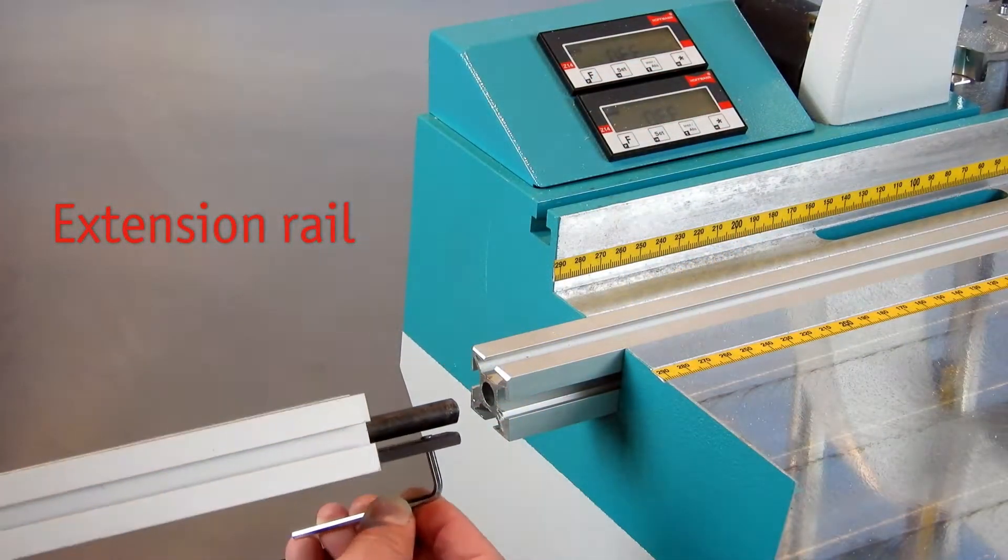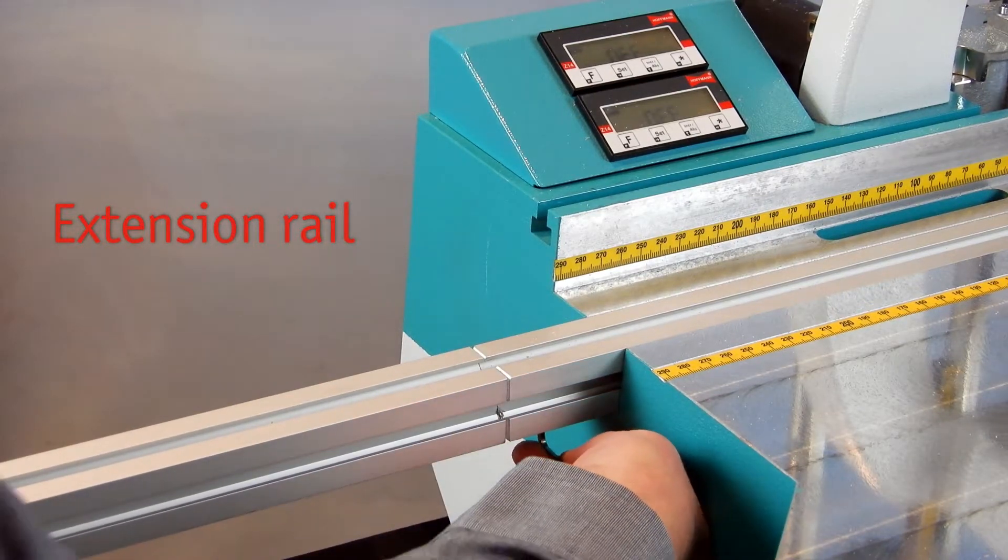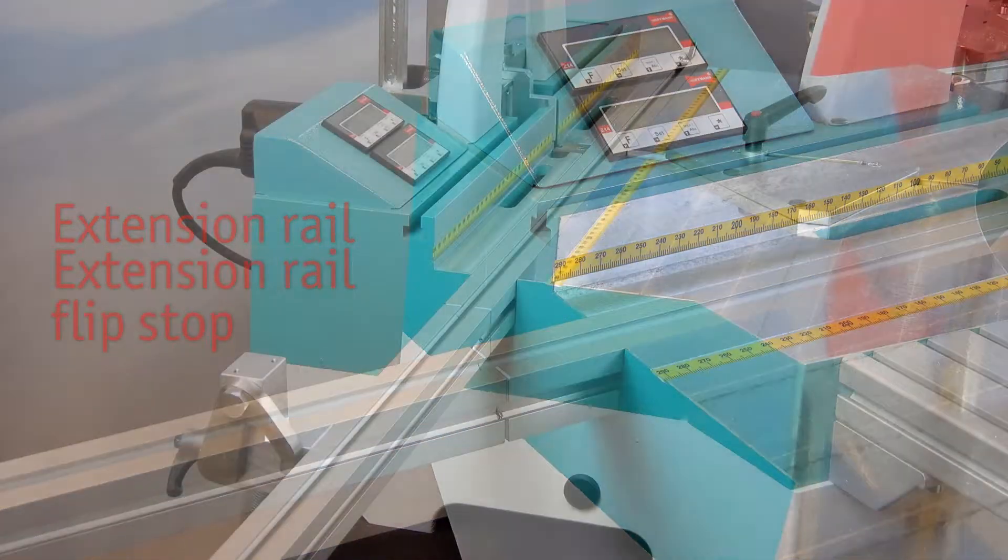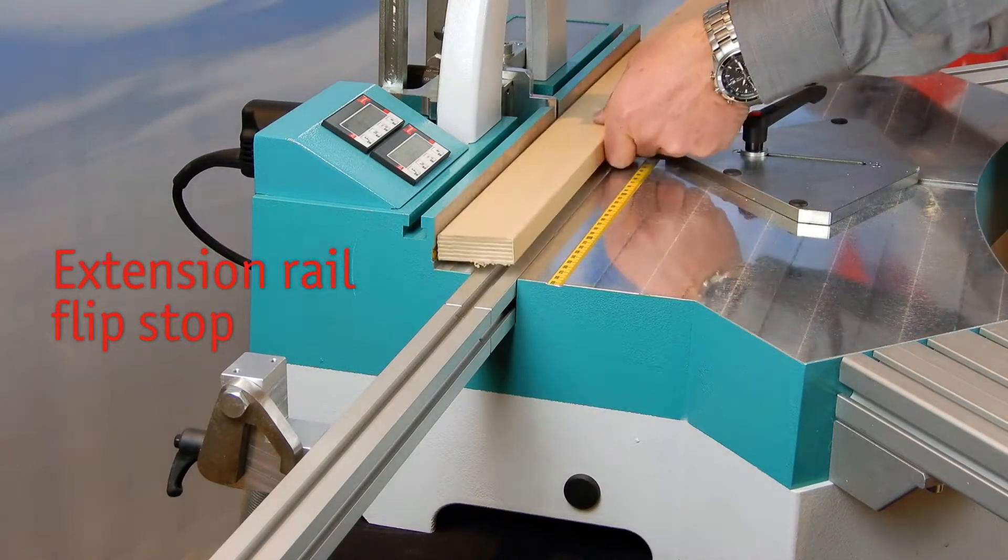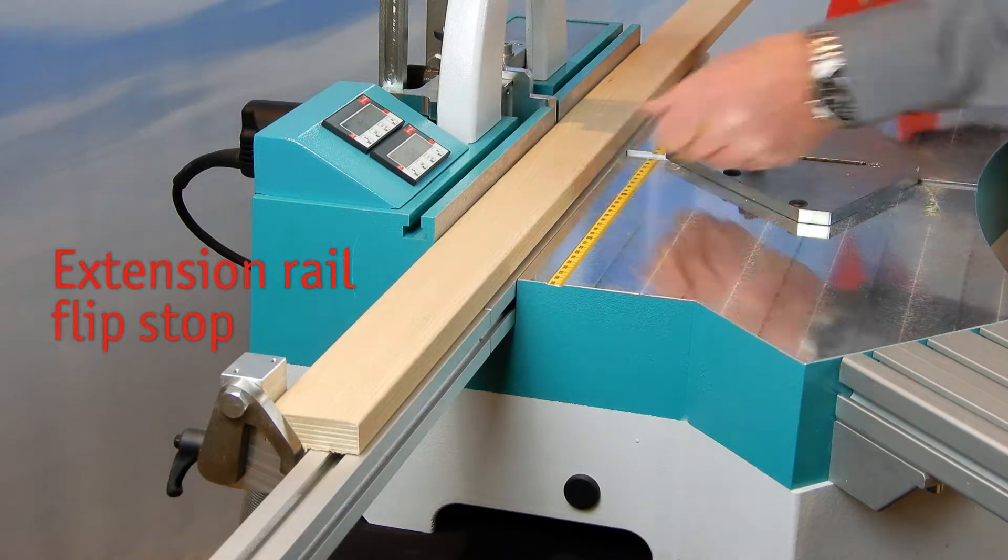For the extension rail assembly, simply slide in the extension rail with its bolt and tongue and make sure to tighten the set screw underneath. Very useful when processing longer material with multiple flip stops for repeated accuracy.